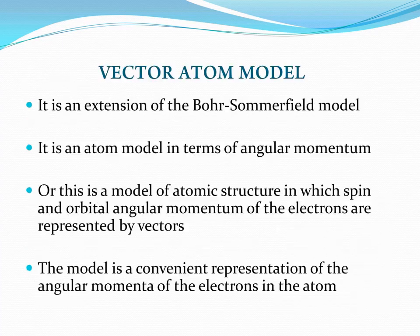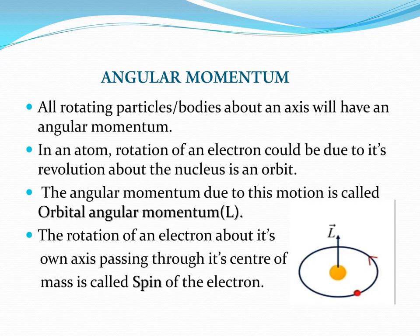This leads us to the vector atom model, which is the extension of the Bohr-Sommerfield model. In this atomic model, electrons represent both spin and orbital angular momentum. The vector atom model is the convenient representation of the angular momentum of an electron in the atom. Angular momentum is the rotational effect of linear momentum.